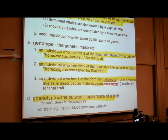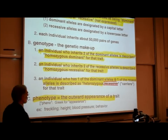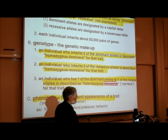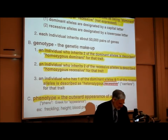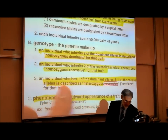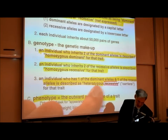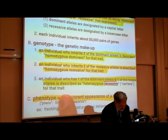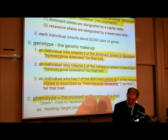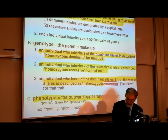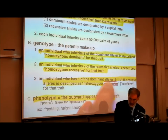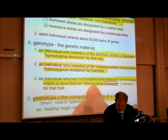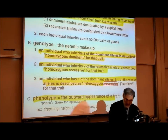An individual who inherits two recessive alleles is described as homozygous recessive. An individual who has one dominant allele and one recessive allele is described as heterozygous, also called a carrier.